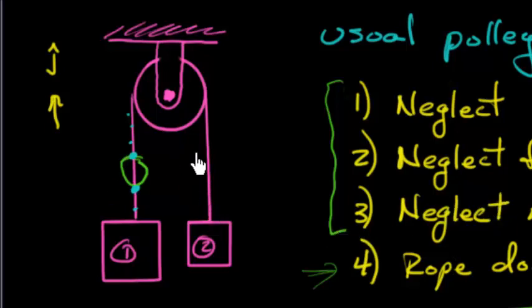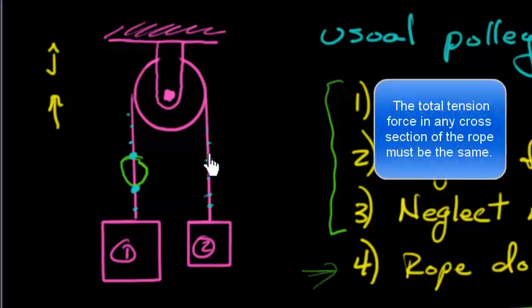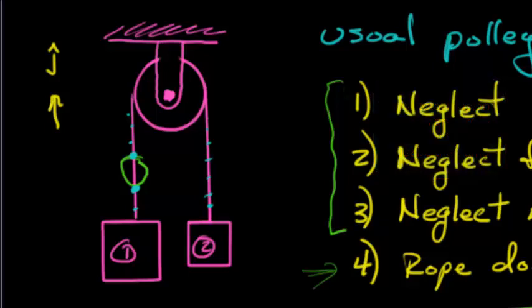So what the result is telling me is that the tension anywhere along this little chunk of rope must be the same if I can neglect the mass of the rope. And I could have done it on this rope over here too. So the tension in any little part along the length of the rope must be constant.